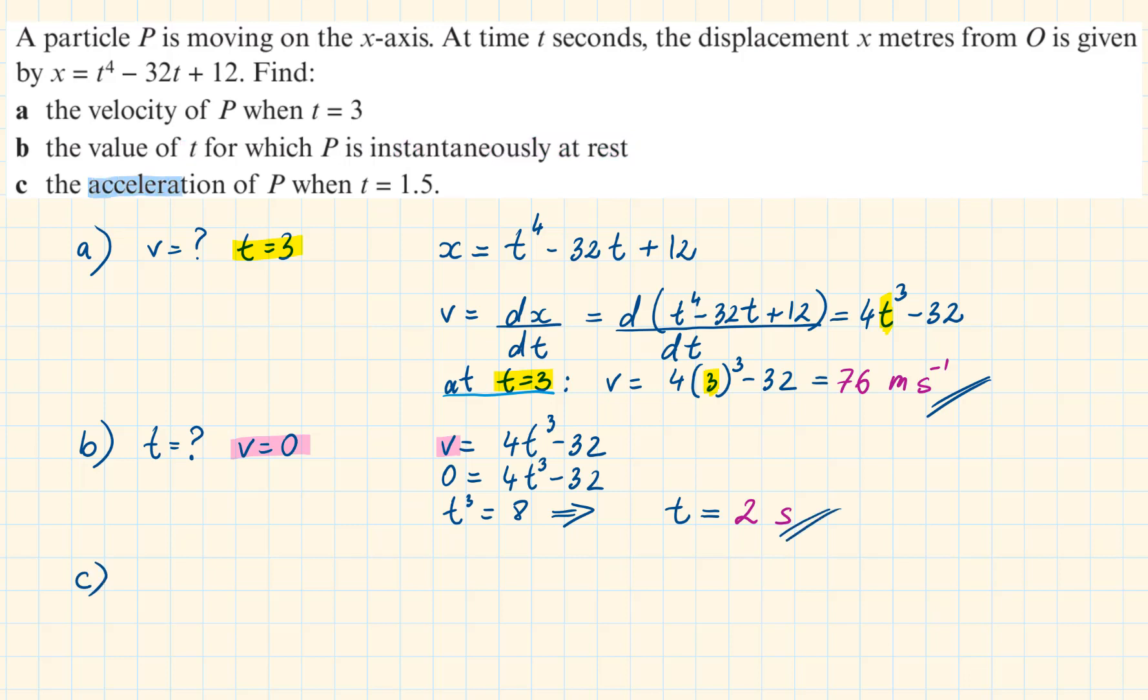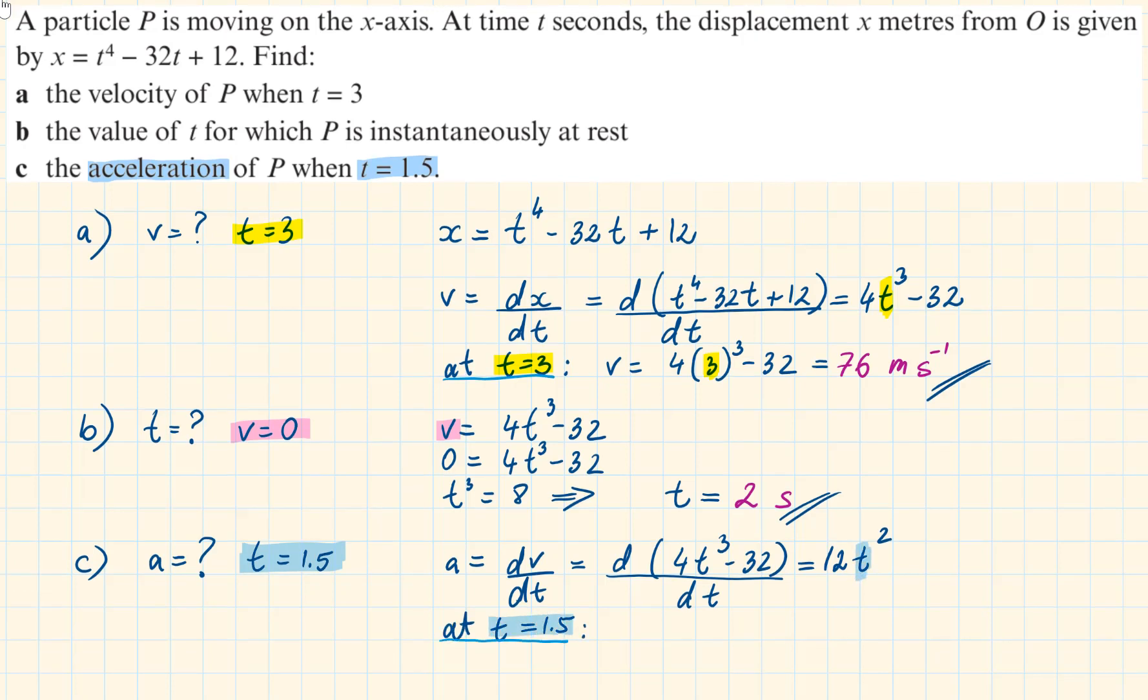Part c: the acceleration of P when t is equal to 1.5. To find the acceleration as a function of time, we have to differentiate the velocity. The result is 12t squared. At t equals 1.5, replacing the t, we have a is equal to 12 times 1.5 squared. This gives us 27 meters per second squared.